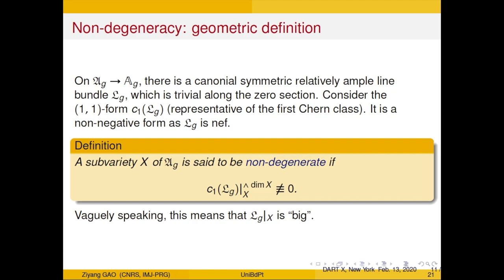We want this tautological symmetric relative ample line bundle L_g restricted to some X to be big in some sense. To check bigness, if the line bundle is nef, we take a (1,1)-form representing its first Chern class, raise it to the correct wedge power, and do the integral. If the integral is positive, it is big. Let's use this to define non-degeneracy: although nothing is compact, this can still be checked. We say the sub-variety is non-degenerate if this (1,1)-form raised to the correct wedge power is not identically zero — so the integral is positive, vaguely meaning it is big.